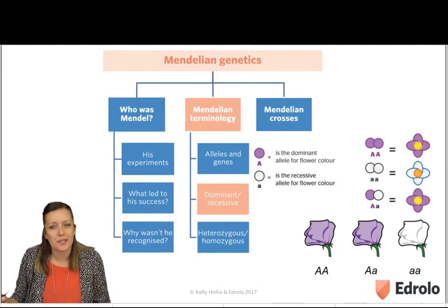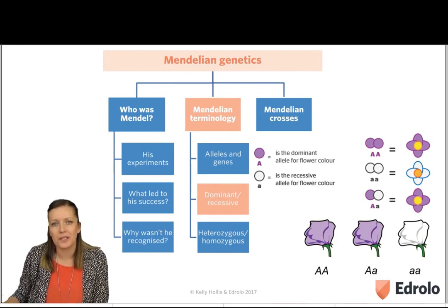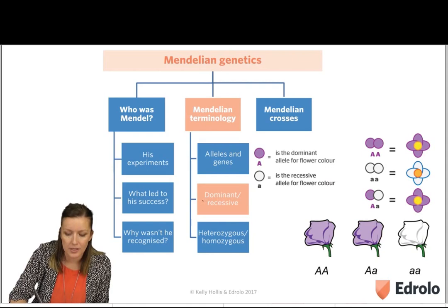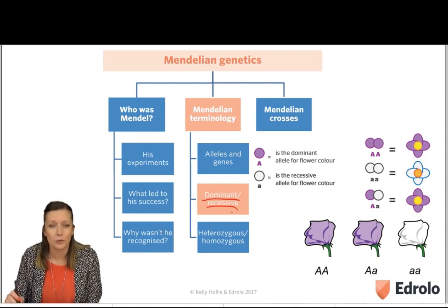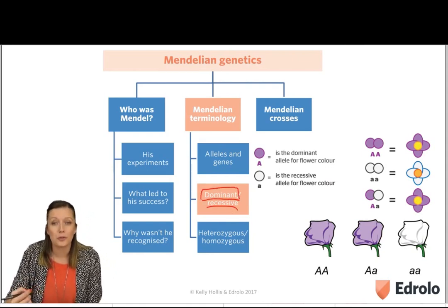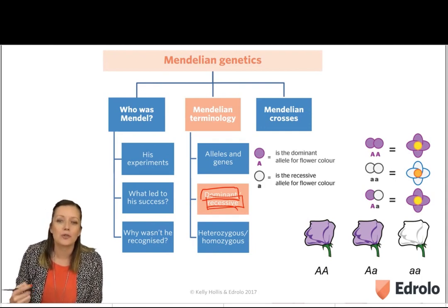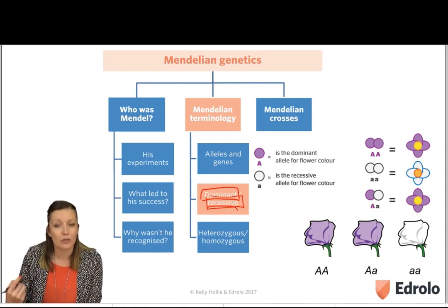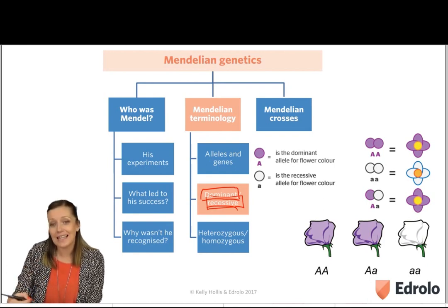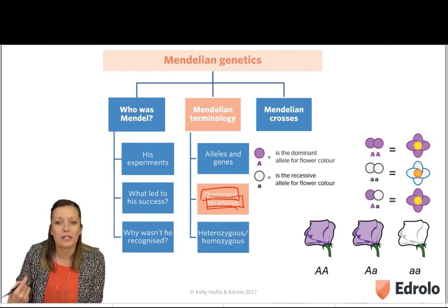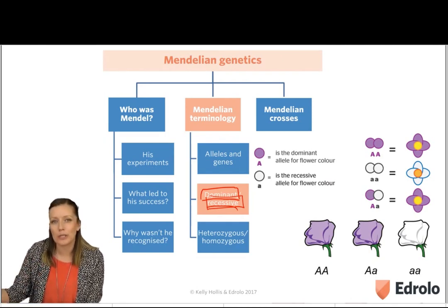Another two terms we need to distinguish between are dominant and recessive. From the terms themselves, you may already be able to distinguish between them — dominant we usually refer to as being stronger or overpowering, and recessive as being weak. In genetics, the dominant trait is not necessarily the stronger trait; it just means that if an individual has the dominant allele in their genes, they will show the dominant characteristic.